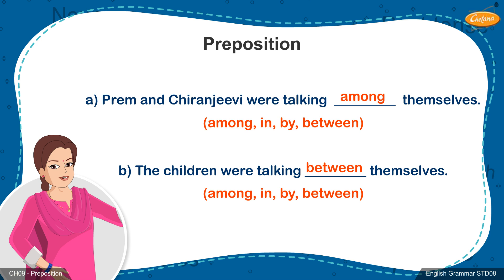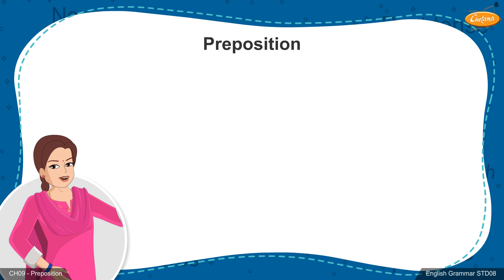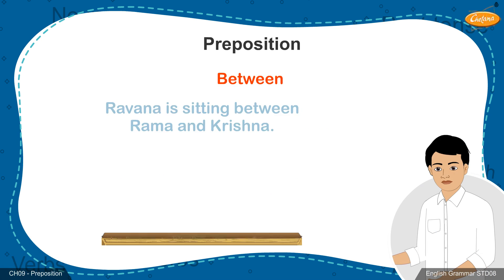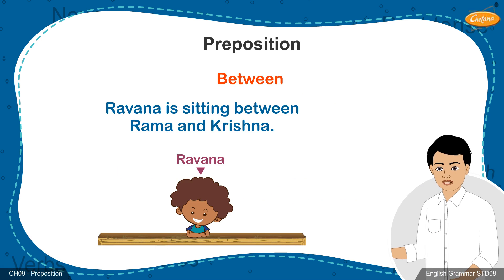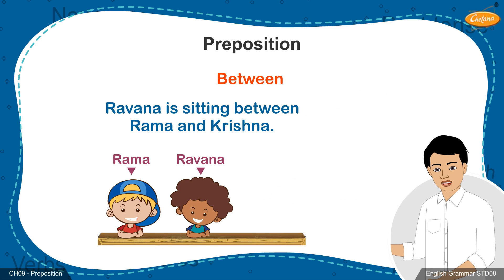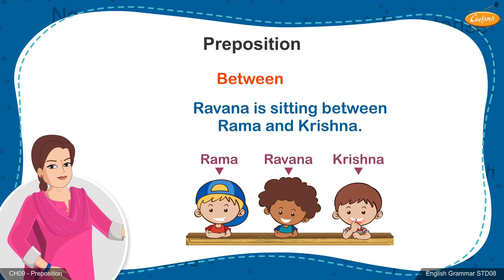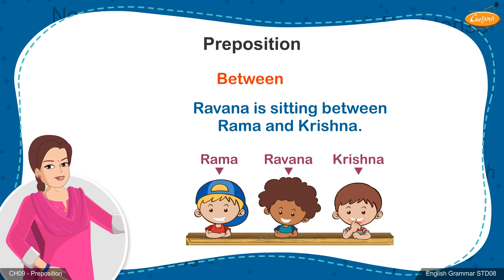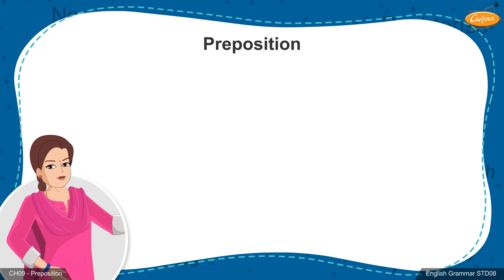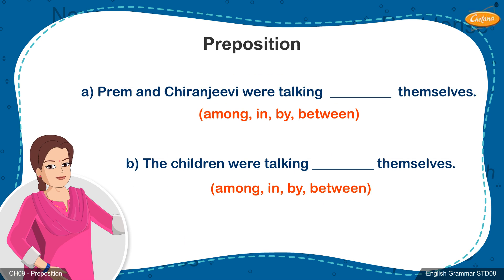Frame a sentence using the word between. Ravana is sitting between Rama and Krishna. That's perfect. You framed it properly. Now, look at the sentence on the screen.